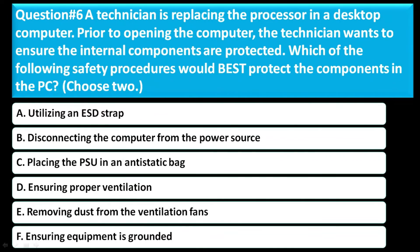Question number six: A technician is replacing the processor in a desktop computer. Prior to opening the computer, the technician wants to ensure the internal components are protected. Which of the following safety procedures would best protect the components in the PC? Choose two. Option A: utilizing an ESD strap. Option B: disconnecting the computer from the power source. Option C: placing the PSU in an anti-static bag. Option D: ensuring proper ventilation. Option E: removing dust from the ventilation fans. Option F: ensuring the equipment is grounded.